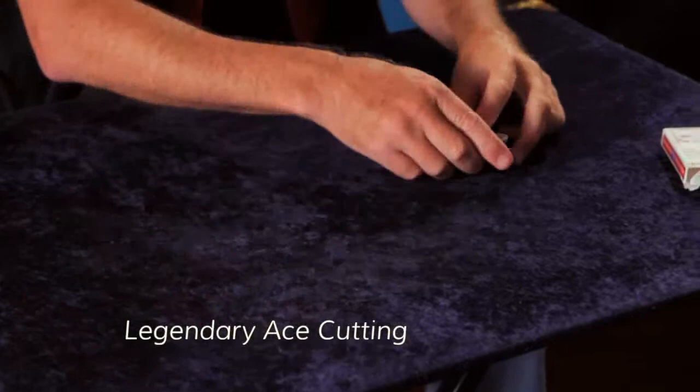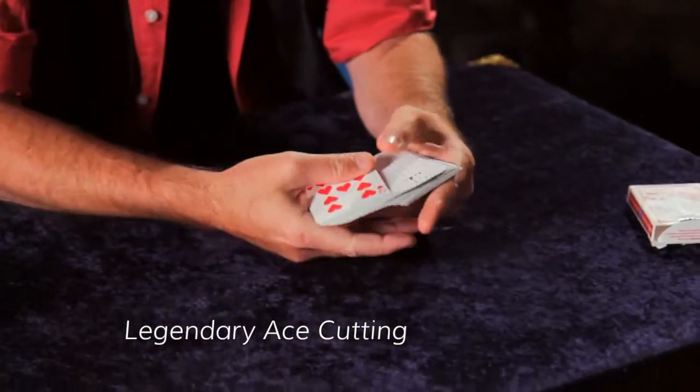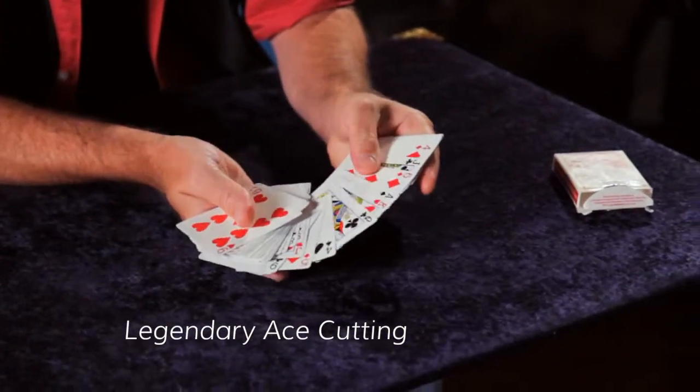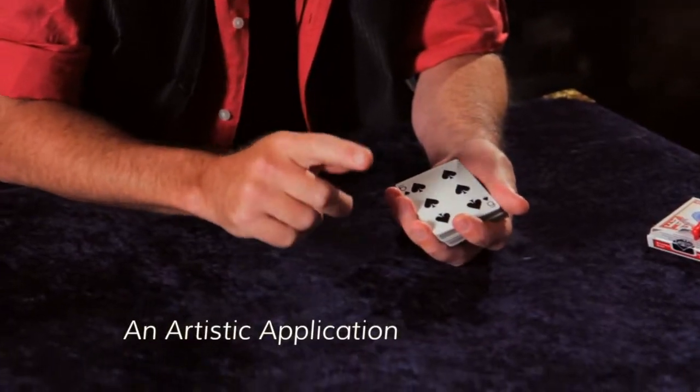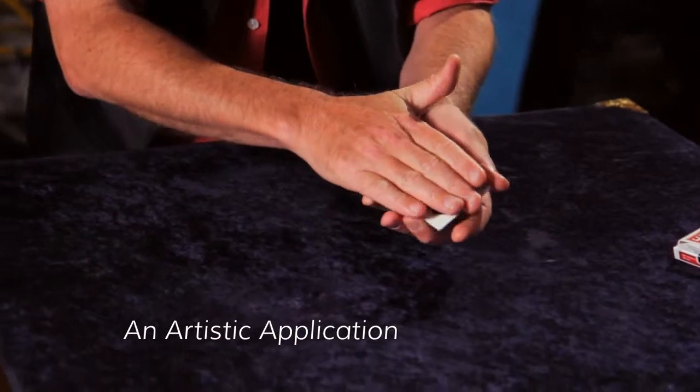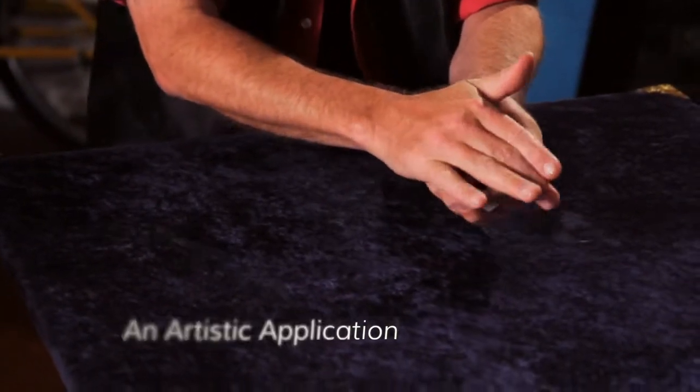And what that means is that after I've done the shuffles, I could say, look, there's an ace over here, there's one over here, there's one over here. And literally, whatever color the spectators pick will appear on that canvas.